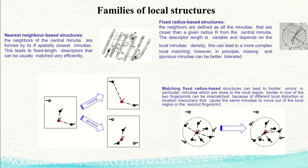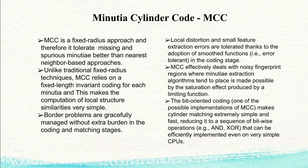The MCC (Minutia Cylinder Code) is a fixed radius approach. Because it uses fixed radius, it handles missing and spurious minutiae better than nearest neighbor — in nearest neighbor we may get a fake minutia, but with MCC we do not. MCC relies on fixed-length invariant coding for each minutia, which makes computation uniform for every minutia, allowing all equations to be easily calculated. The border problem discovered with fixed radius is solved, but the burden is shifted to the coding stage.